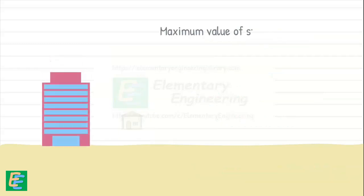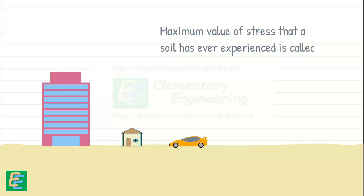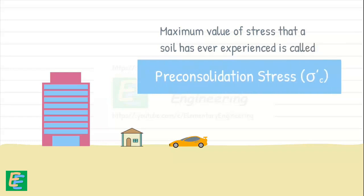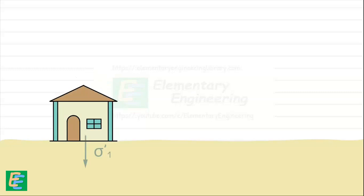The maximum value of stress that a soil has ever experienced is called pre-consolidation stress, sigma prime c. Consider a virgin soil that has never been loaded before. If we load it with some effective stress, say sigma prime one, this stress becomes its pre-consolidation stress as this is the maximum it has ever experienced.